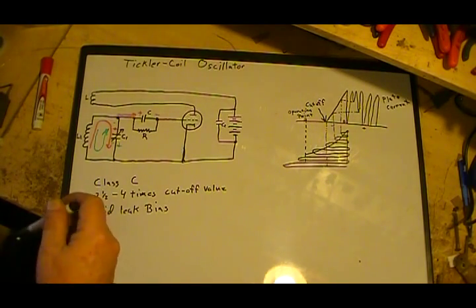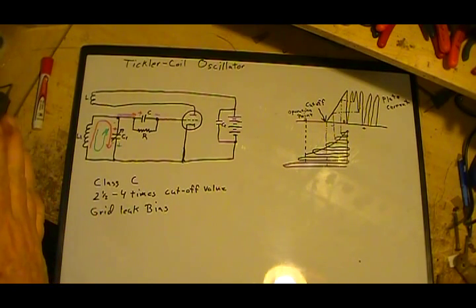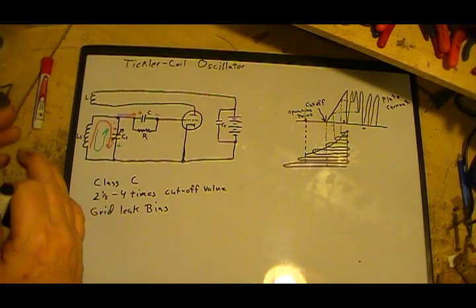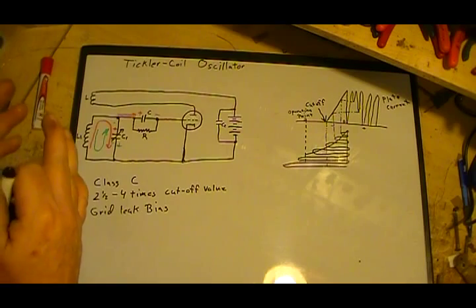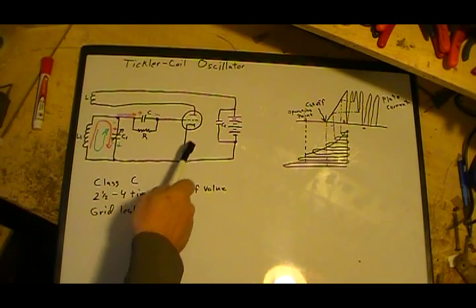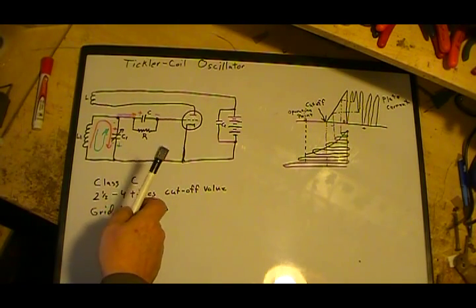And what that does is in class C operation, only a certain portion, a very small portion of the plate current flows, only a very short period of time.